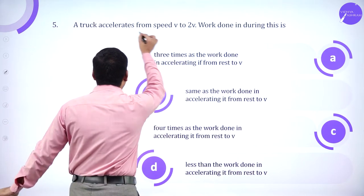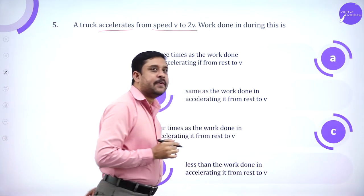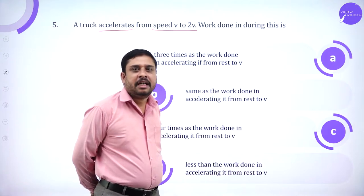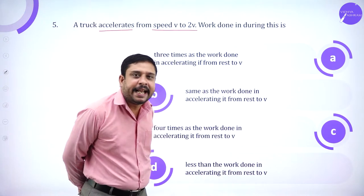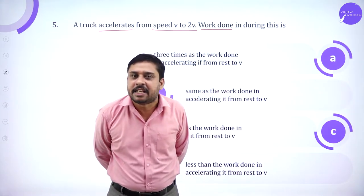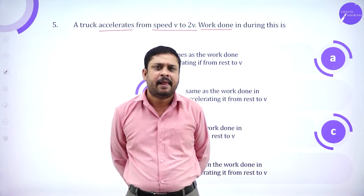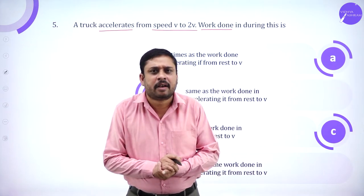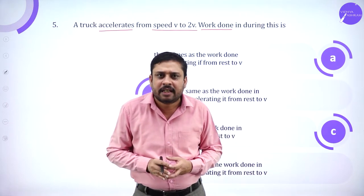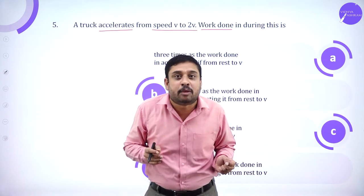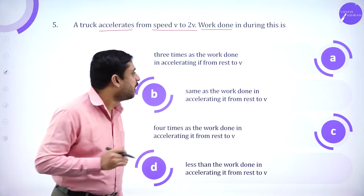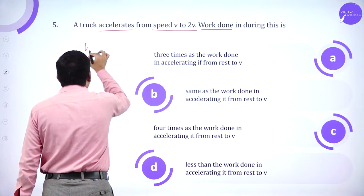A truck accelerates from speed v to 2v. Initial speed is v, the truck is accelerating to a speed of 2v. The work done during this acceleration has to be calculated. How do I relate work done to speed? While work done equals force into displacement, an alternative definition uses work-energy theorem.